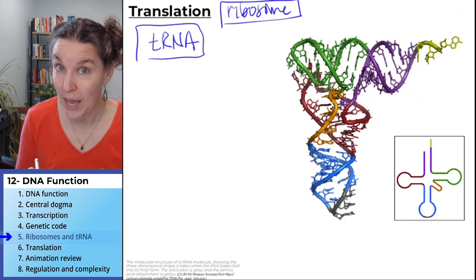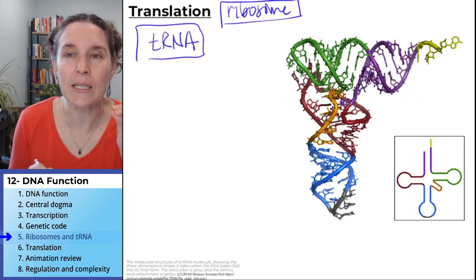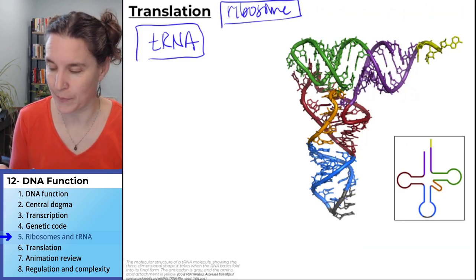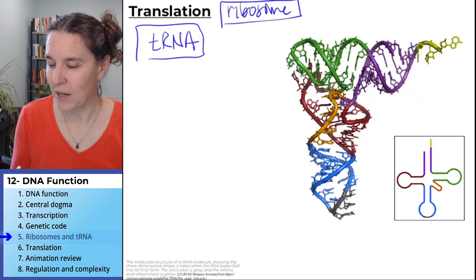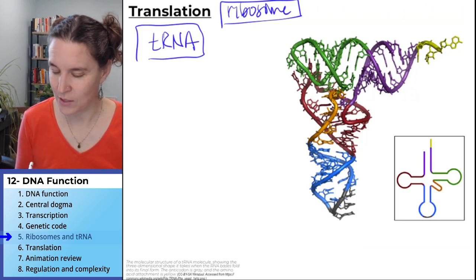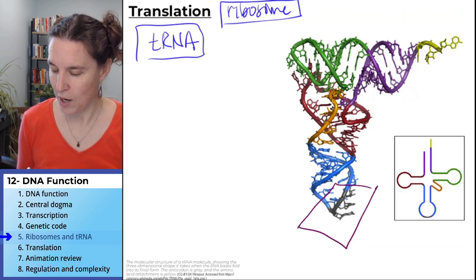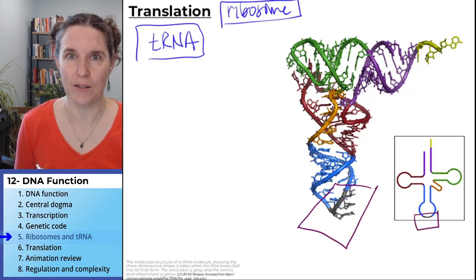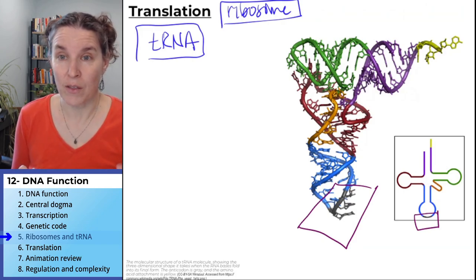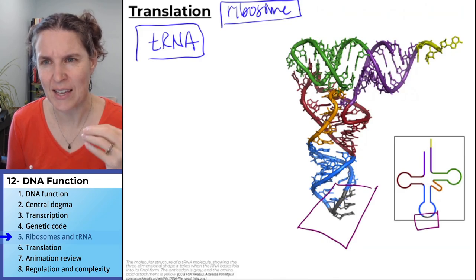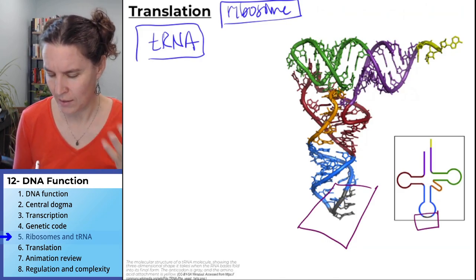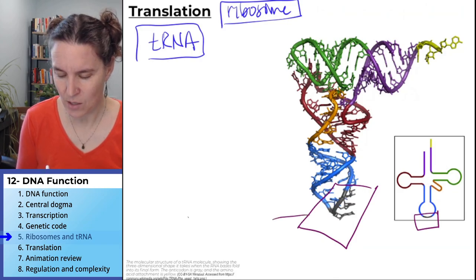And this shape has two really important parts. One part — and do you guys know how much I love this stuff? It's so cool. This part, here in our picture, in our folded 3D shape image of a tRNA molecule — tRNA stands for transfer RNA, that's what the T stands for — this part is called the anti-codon.